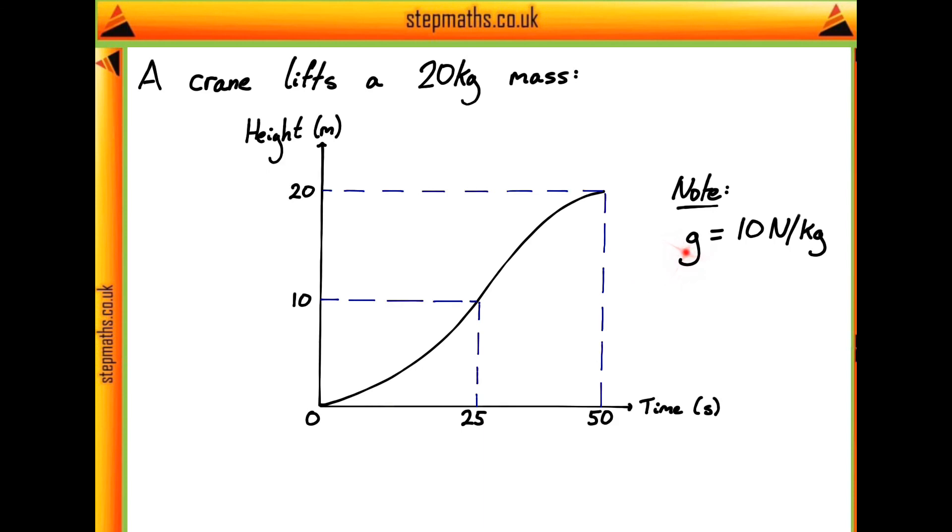We're also told to note that the gravitational field strength g is equal to 10 newtons per kilogram, and the question asks what is the power output of the crane at a height h of 10 meters.